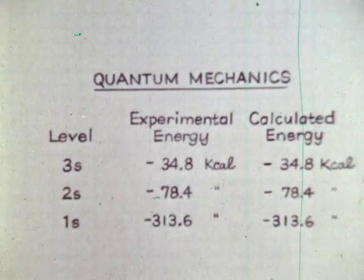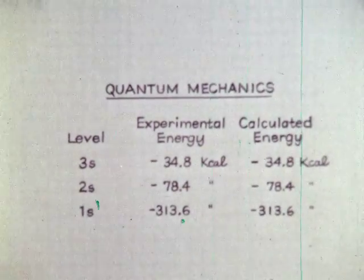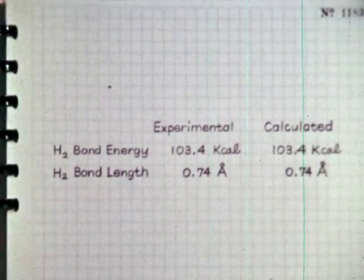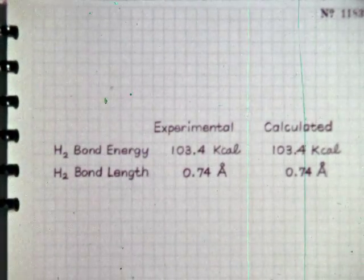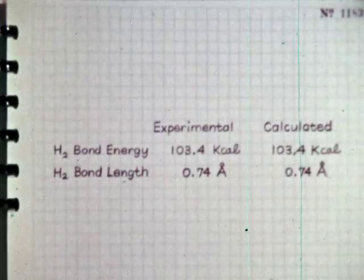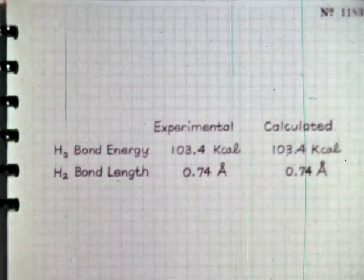Thus we see that quantum mechanics provides an explanation for the specific energies observed for the hydrogen atom. Because quantum mechanics also confirms all other properties of the hydrogen atom that can be measured, we believe the results quantum mechanics gives for those properties that are more difficult to measure.